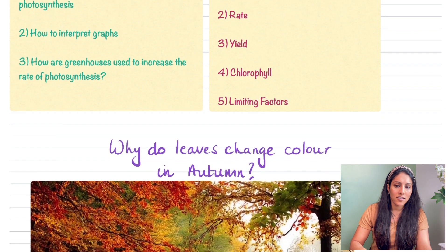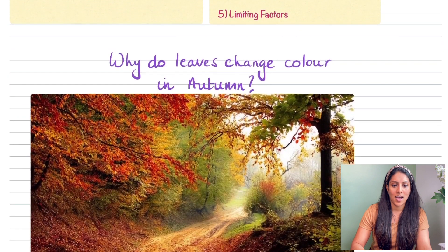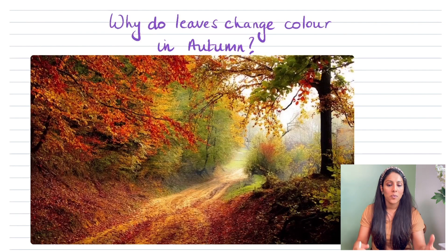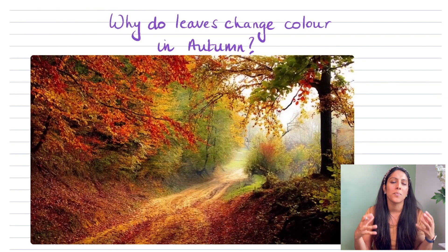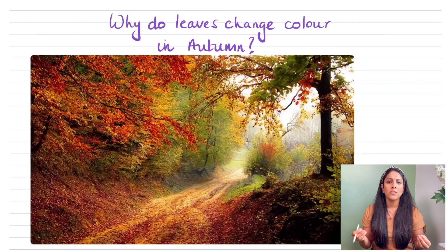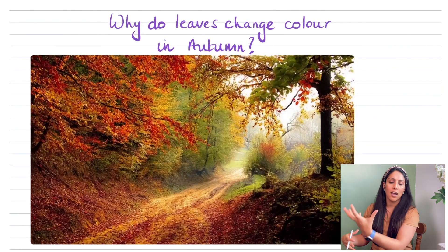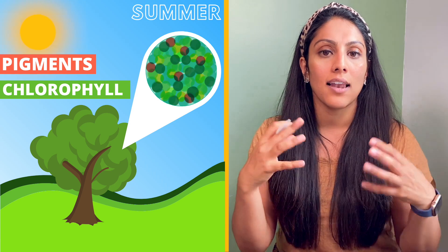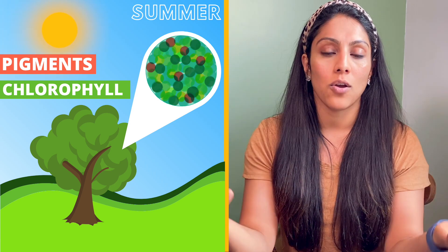Why do leaves change their colour in autumn? We all walk through autumn seeing these beautiful trees, but what causes them to change from green to oranges and yellows and reds? It all comes down to chlorophyll. Plants already have lots of pigments found in their leaves, however it's the chlorophyll that allows it to be shown as green.